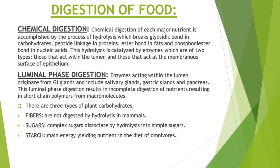Chemical digestion is a process where complex molecules like proteins, fats and carbohydrates are broken down into smaller pieces that can be used by the body of the animal. This process requires special proteins which are called enzymes. Chemical digestion of each major nutrient is accomplished by the process of hydrolysis, which breaks glycosidic bonds in carbohydrates, peptide linkage among proteins, ester bonds among fats, and phosphodiester bonds in nucleic acids.